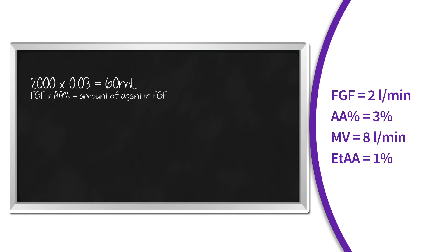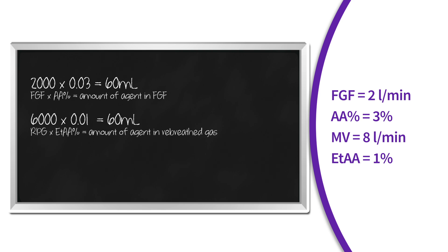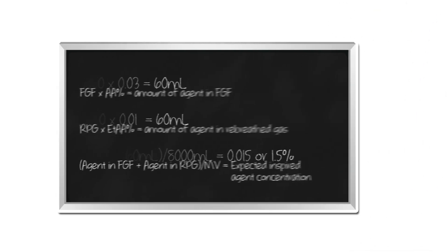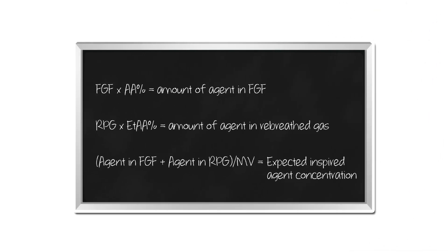With 8 liters per minute of minute ventilation: 2 liters per minute of fresh gas flow at 3% set agent concentration equals 60 milliliters; 6 liters per minute of re-breathed gas at 1% expired agent concentration equals 60 milliliters. You add them together to get 120 milliliters of agent in 8,000 milliliters minute ventilation, which equals 0.015 or 1.5% expected inspired agent concentration. This equation can also be used when trying to determine FiO2.